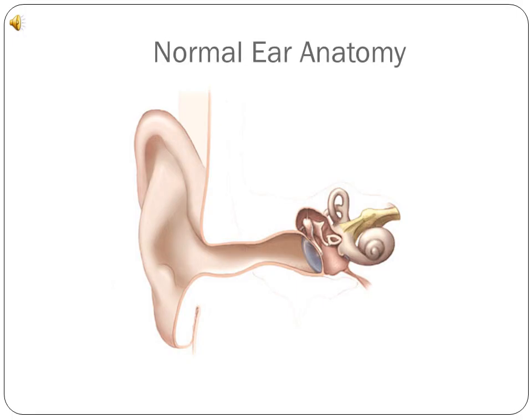The human ear is divided into three anatomical sections: the outer ear, the middle ear, and the inner ear.